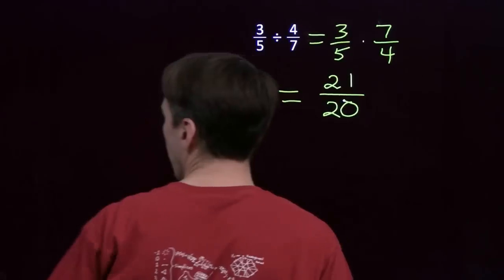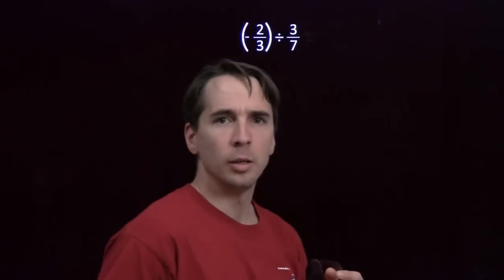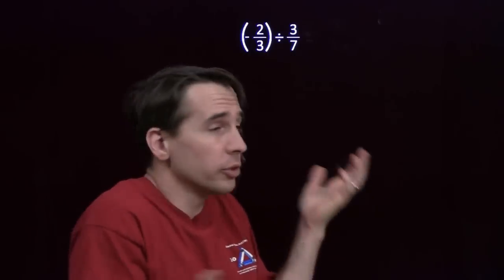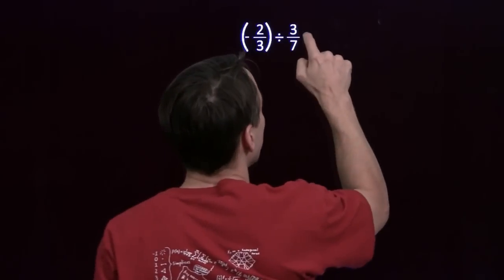Let's do one more, make sure we have this down. We will move on to dividing a negative fraction by a positive fraction. Now we already know from our rules for division, if you divide a negative by a positive, you're going to get a negative. We know how to deal with the negative right away.